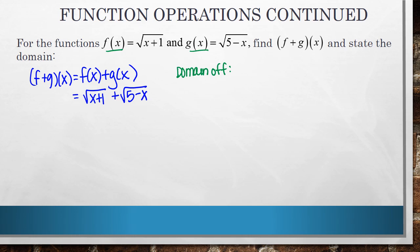So the domain of f, since we're looking at a square root function, it's going to be all of the values that are going to make that square root bigger than or equal to 0. So I get x has to be bigger than or equal to negative 1.